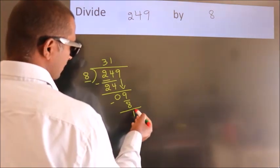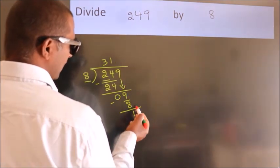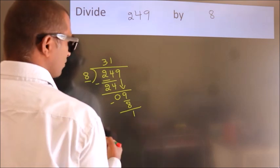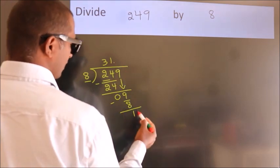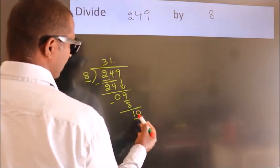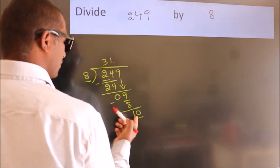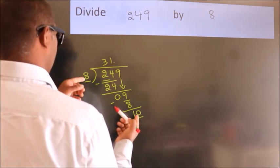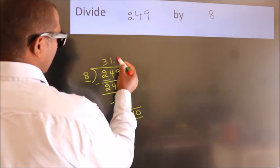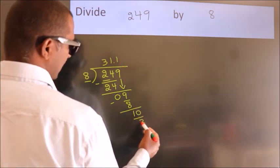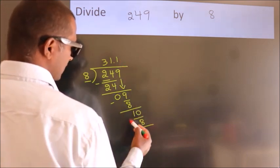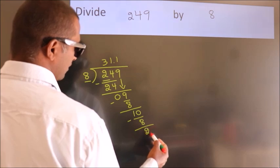After this, no more numbers to bring it down. So what we do is we put dot take 0. So 10. A number close to 10 in 8 table is 8 once 8. Now we subtract. We get 2.